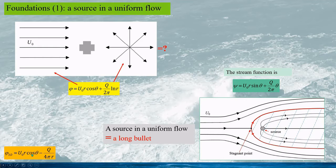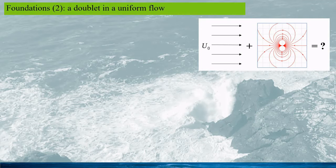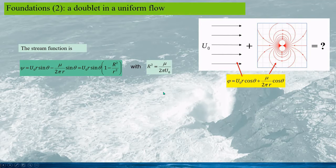In 3D, the potential function is given by the corresponding expression. The second example is a doublet in a uniform flow. The total potential is given as the sum of the potentials of the uniform flow and of the doublet. Similarly, the total stream function is the sum of the stream functions of the uniform flow and of the doublet.